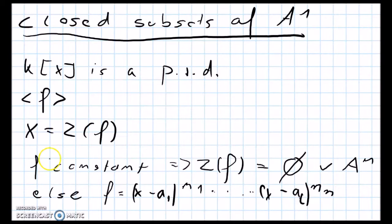So there are two cases we need to consider. Either f can be constant. In this case, z(f) is either the empty set or A¹.